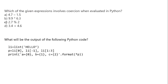Next is an MCQ from Python: which of the given expressions involves coercion when evaluated in Python? Coercion means explicit type conversion. Looking at the options: 4.7 and 5.5 are both float — no coercion needed. 9.9 and 6.3 are both float — no coercion needed. But 2.7 is float and 2 is integer, so Python will explicitly convert 2 to 2.0. That expression involves coercion, so the correct answer is option C.